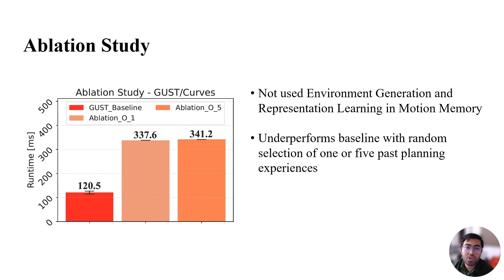Here, to demonstrate the necessity of the motion memory technique, we conduct an ablation study in which we do not use the environment generation or representation learning in motion memory but randomly pick a past plan to assist the motion planner. This figure shows that randomly picking one or five past plans to assist GUST in curves environments in an open box manner will increase the planning time.